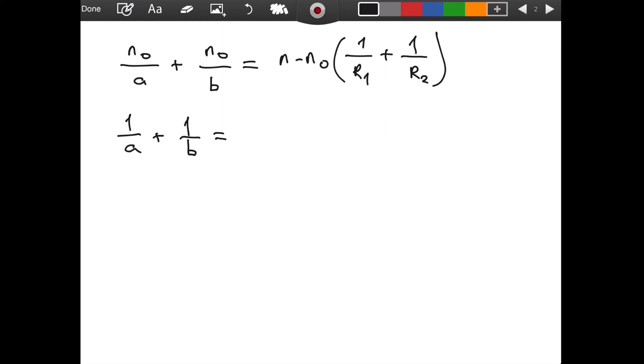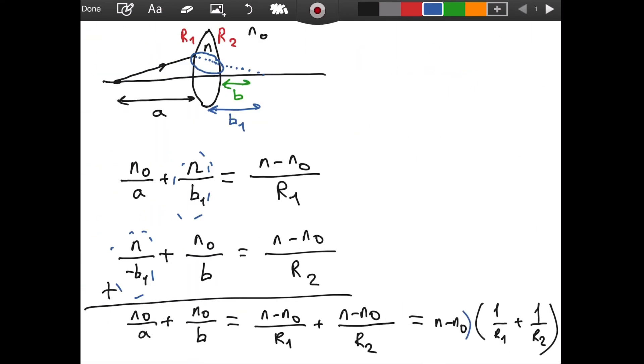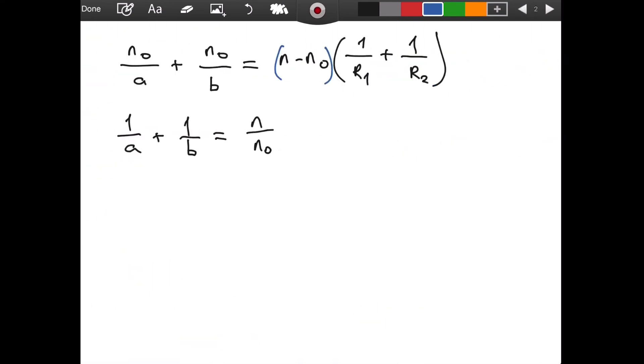Then, if I divide both sides by n₀, I will have n minus n₀. And, let's put the parentheses here. We have that. And, if I divide n₀ by n₀, I get 1. And, I close the parentheses. And, then, I have the sum of the reciprocals. And, this is the lens equation. This is the thin lens equation.